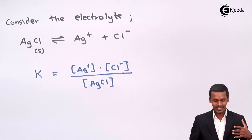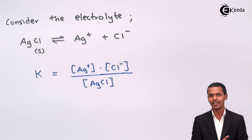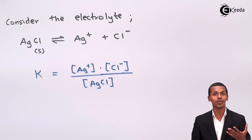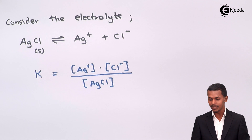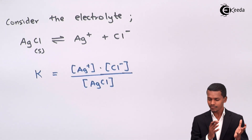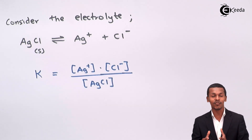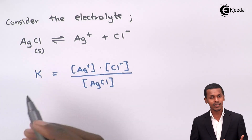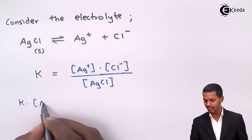Each ion is raised to the power of the stoichiometric coefficient, which is very much similar to the law of mass action that we applied when deriving the equilibrium constant for weak acids and weak bases. Similarly, the solubility product is essentially the product of the ions formed from the electrolyte.